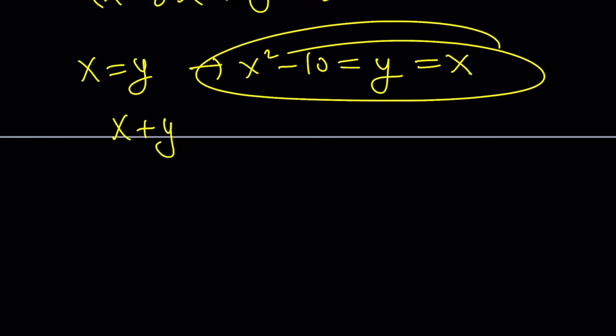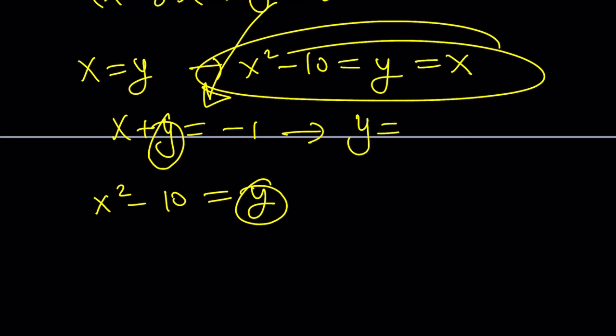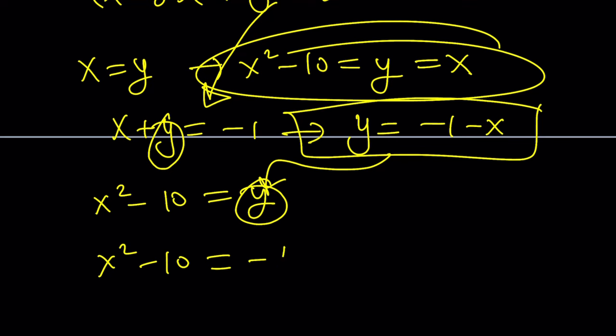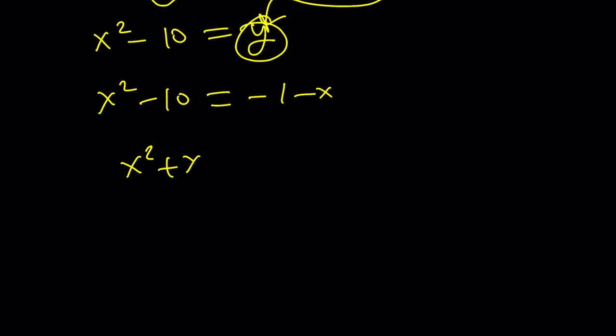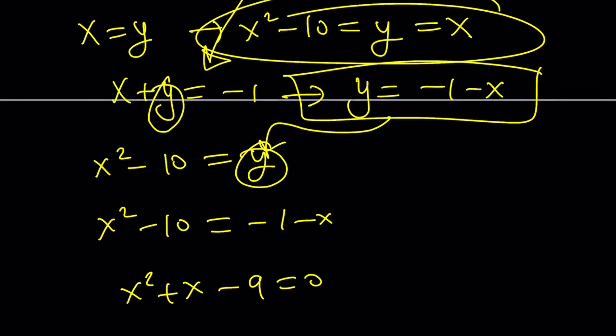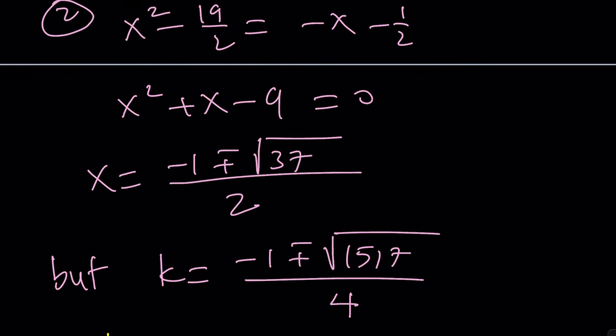What's the other thing? This one. And let's replace this in our system. Now we can replace y with negative 1 minus x. And then we get the same thing, which is this one.